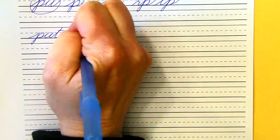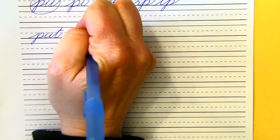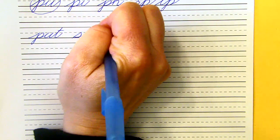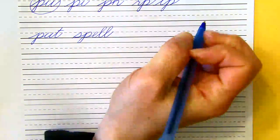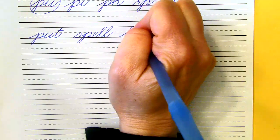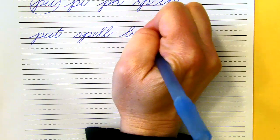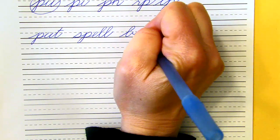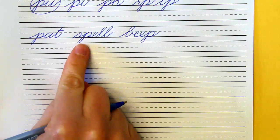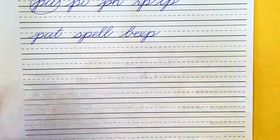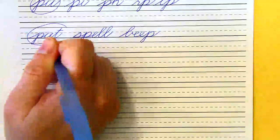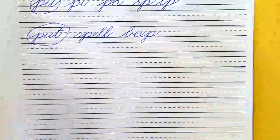And again, Mrs. D's focusing on a uniform slant and uniform spacing. And here's one more. Let's see if you can read them. If you read put, spell, and beep, you're right. You're getting very good at reading cursive. I think this one looks the best. Let me circle that one.